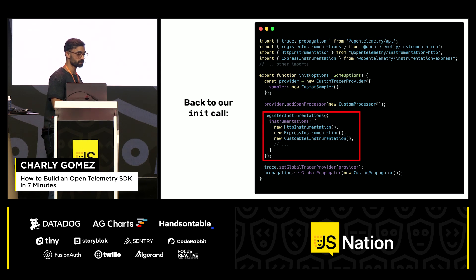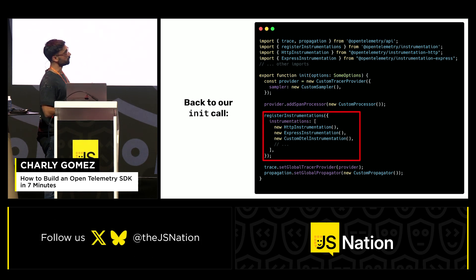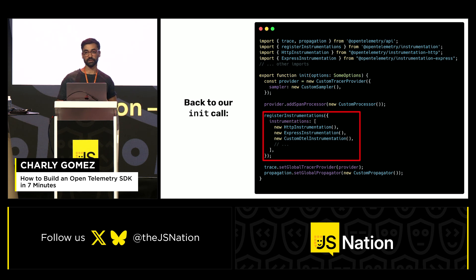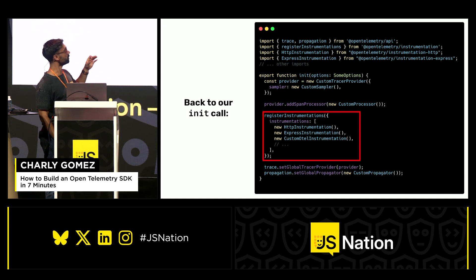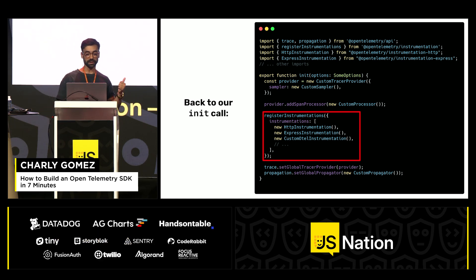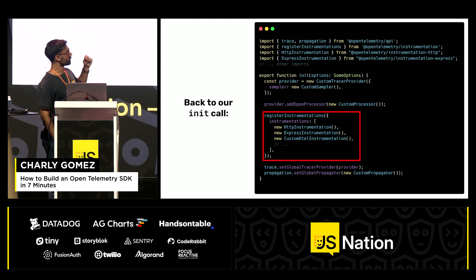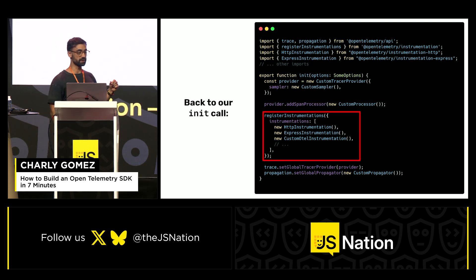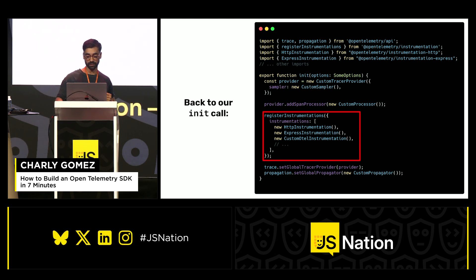Coming back to our init call — this would be a very basic example of how an OpenTelemetry setup could look. It includes several building blocks. The important thing is the register instrumentation call marked in red, where we provide an array of instrumentations: one for HTTP, one for Express, and our custom OpenTelemetry instrumentation that we just wrote. The key point is that HTTP and Express are community-maintained, so they are external. That's the power of OpenTelemetry — since it provides a standardized way of doing things, we can just mix and match community-based libraries and our own instrumentations.